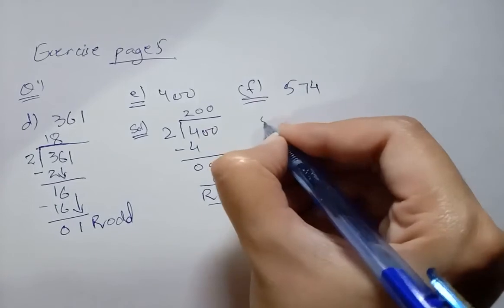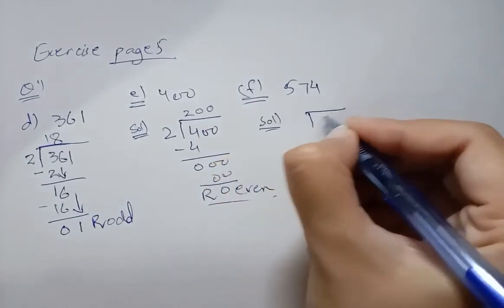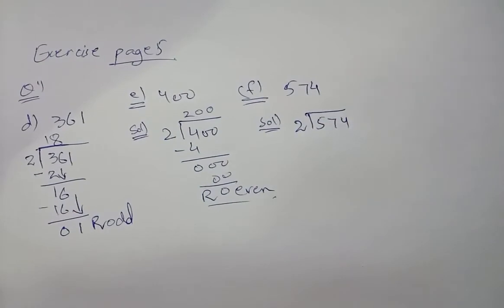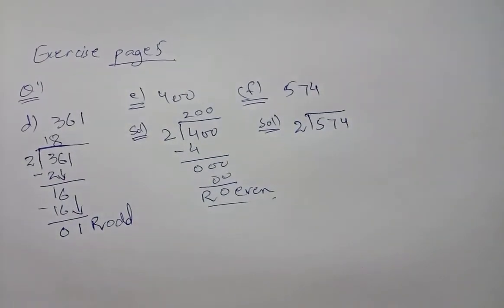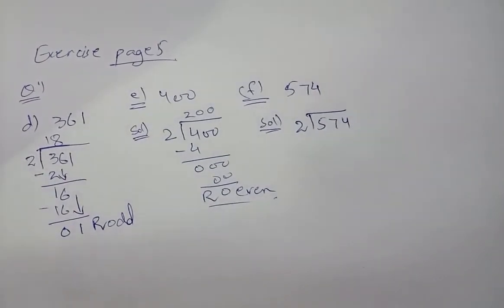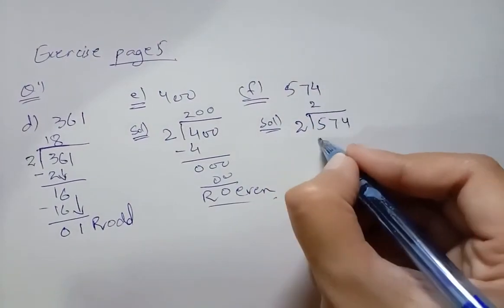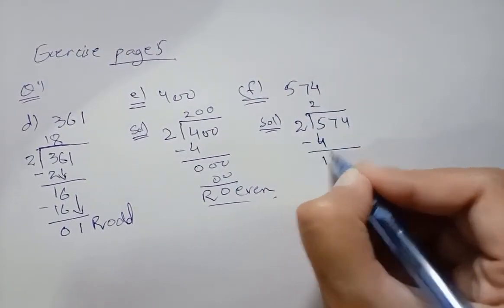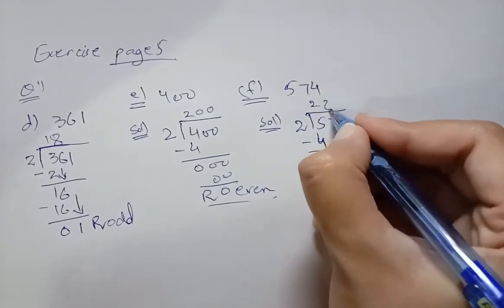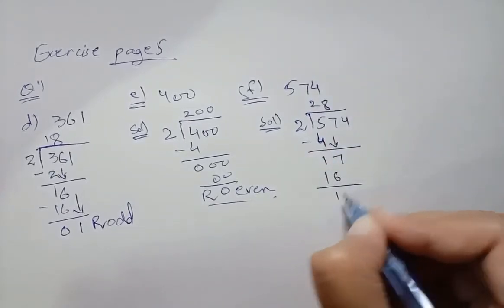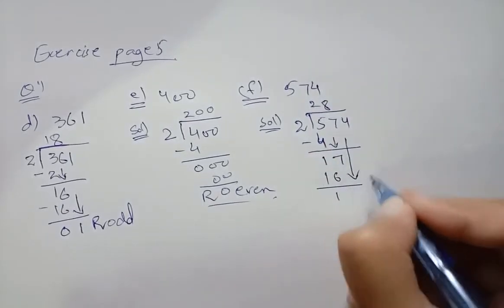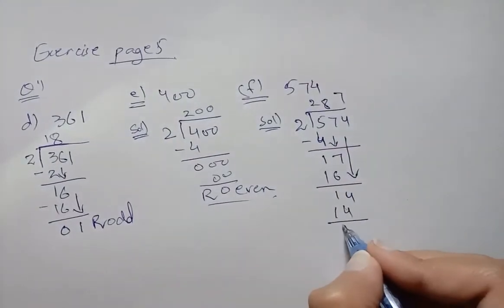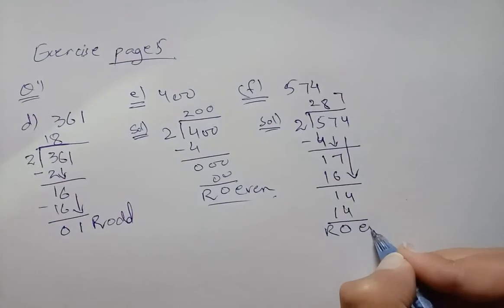The next question is part f: 574. We divide it by 2. Always remember, to find whether a number is even or odd, we divide by 2. Two twos are four — subtract, the answer is 1. Two eights are sixteen. Two sevens are fourteen. The remainder is 0, so 574 is an even number.